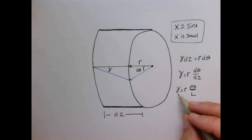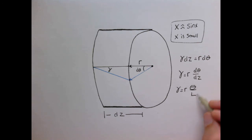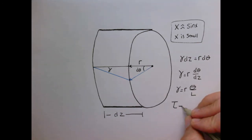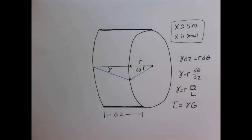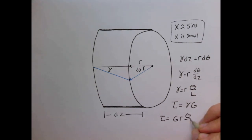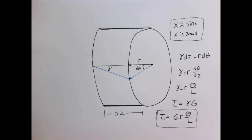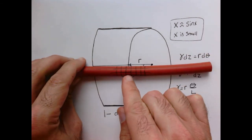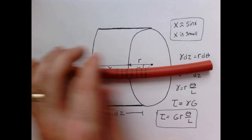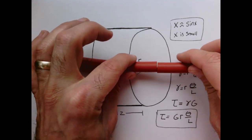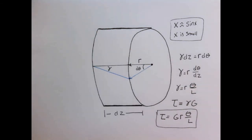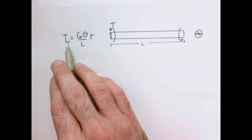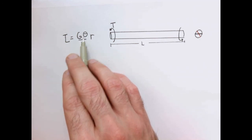Since we have a relationship for the shear angle, we can relate the stress in the bar to the angle of twist. Hooke's Law tells us the shear stress equals the shear angle times G, and now we have a relationship for this shear angle, so it's G times r times the total twist divided by L. When I twist this bar, there's a sliding action that happens along the surface — that's the definition of shear. So there's a shear stress acting along a cross-sectional face when the bar is in torsion.